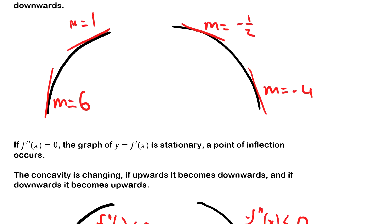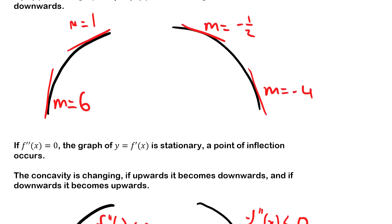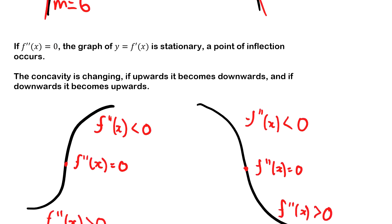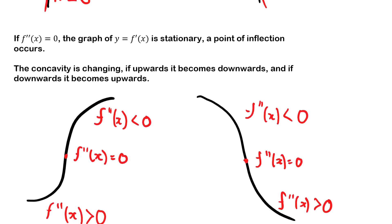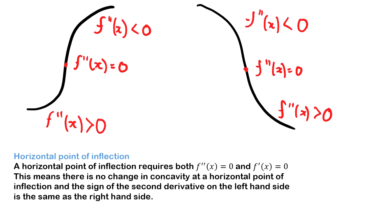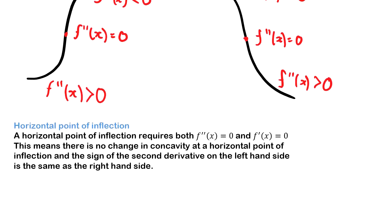You can also find a stationary point using the second derivative where it equals zero — the concavity is changing at this point from upwards to downwards or downwards to upwards. At a horizontal point of inflection there is no change in concavity, and the sign of the second derivative on the left-hand side is the same as on the right-hand side.